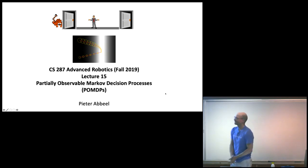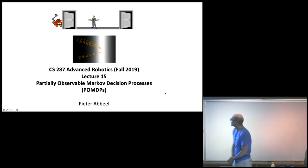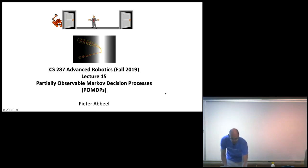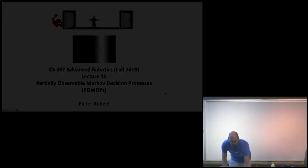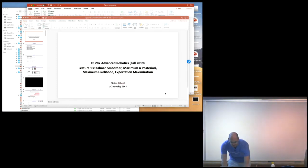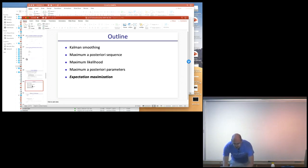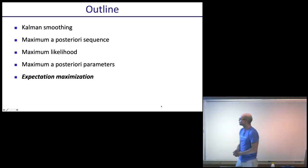Welcome to lecture 15 of advanced robotics. We're going to cover POMDPs — partially observable Markov decision processes — today. We actually still have a little bit to cover from lecture 13. We saw maximum likelihood, but we didn't yet cover expectation maximization, so I'm going to switch to the last section of lecture 13: expectation maximization.